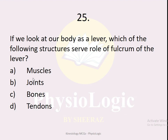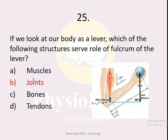MCQ number twenty-five: if we look at our body as a lever system, which of the following structures serve the role of the fulcrum — muscles, joints, bones, or tendons? The correct option is joints. When the biceps contract and we flex the elbow, the movement occurs at the elbow joint. The point where movement occurs in a lever is the fulcrum, so in the human body, joints serve as the fulcrum. That concludes the first 25 MCQs of kinesiology; the next 25 will be discussed in the next video.